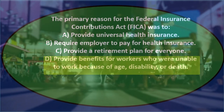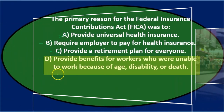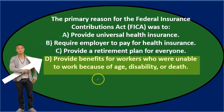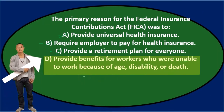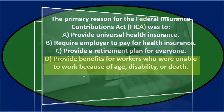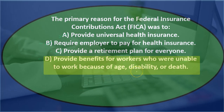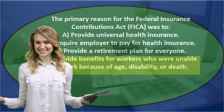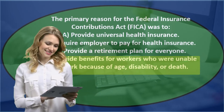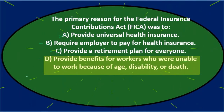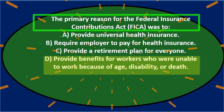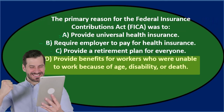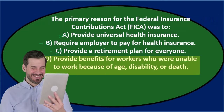D encapsulates that by saying 'provide benefits for workers who are unable to work because of age' — meaning they lived past their life expectancy and can't work, or they had a disability or death. That's more of a safety net program, which is the original intent of FICA. So D is the correct answer. Once again, the primary reason for the Federal Insurance Contribution Act or FICA was D: provide benefits for workers who were unable to work because of age, disability, or death.